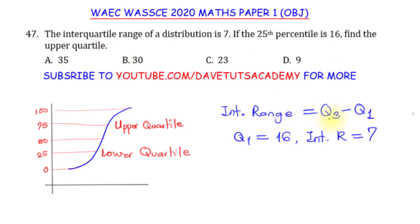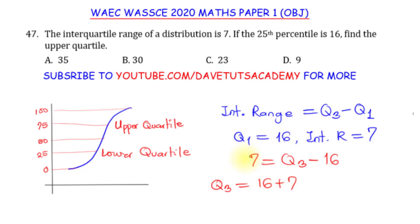We are asked to find the upper quartile Q3, which is the 75th percentile. Plugging in the values: the interquartile range of 7 equals Q3 minus Q1, which is 16. So Q3 equals 16 plus 7, which is 23. Looking at our options, option C corresponds to 23, and that is our answer. We just need to understand percentiles and quartiles to find the interquartile range and substitute appropriately to get our answer.